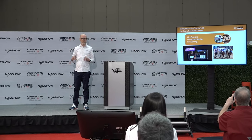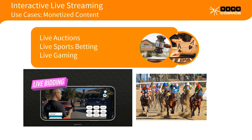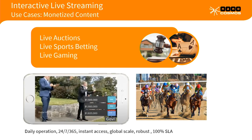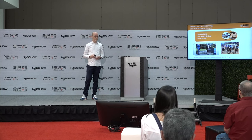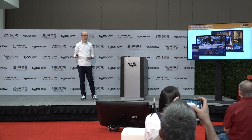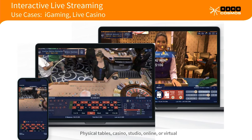Coming back to monetized content — live auctions and live betting are interesting use cases with a direct revenue channel. One example is real-time real estate sales done by one of our customers in Australia, where bidders participate in sales activity without going to the venue. Other examples include horse racing or casino gaming, which is very prominent here in Las Vegas. You can expand casino games to the virtual space by creating interactive live games with a gaming business application around the live stream.